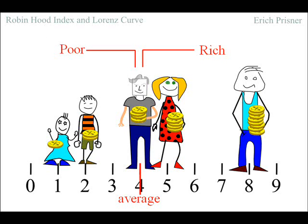Next we separate the population into poor, below average, and rich, above average. In this example I am neither poor nor rich, just average.